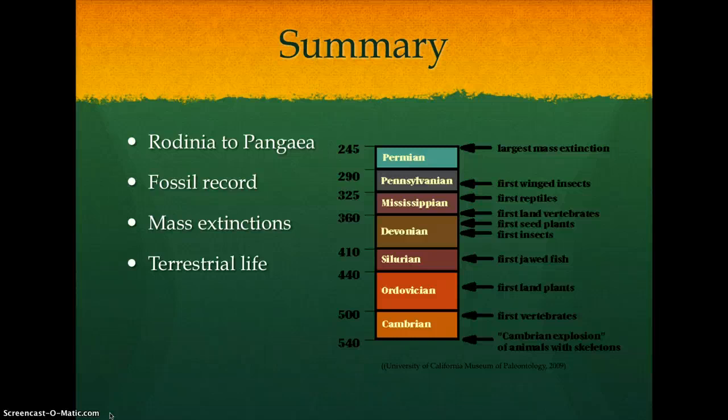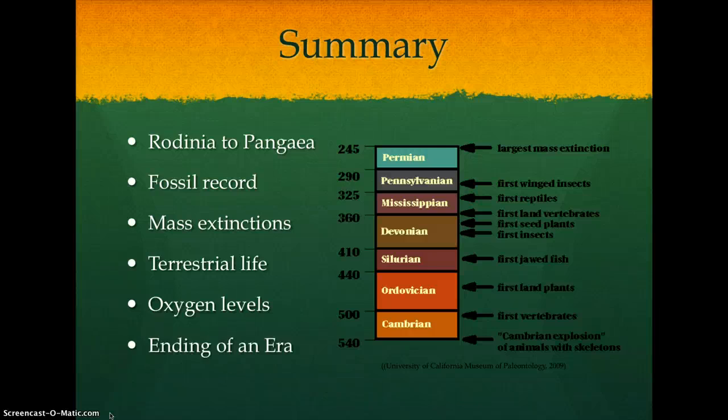Although the Paleozoic era began with an atmosphere low on oxygen levels, as vegetation flourished, oxygen levels increased, leading to larger and more diverse life forms in the Carboniferous period. Finally, the era ended in a hypoxic environment during the Permian extinction, thought to be the result of massive volcanic activity.